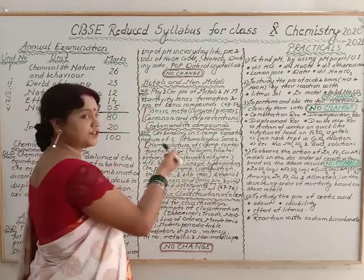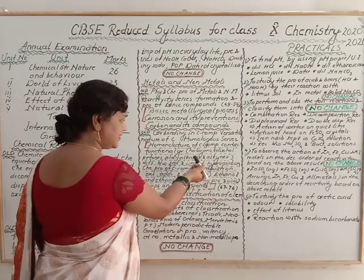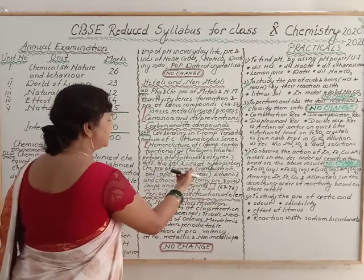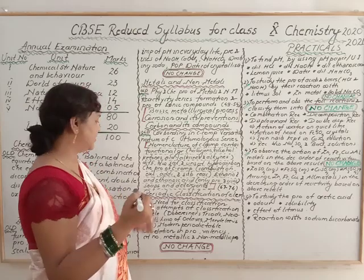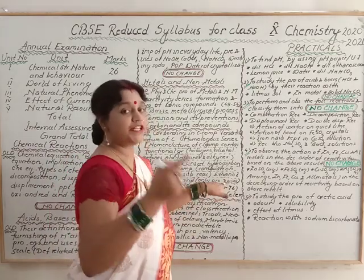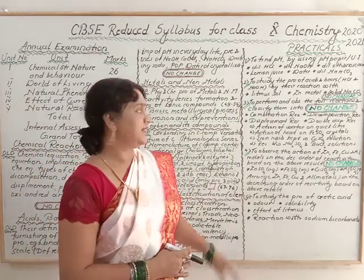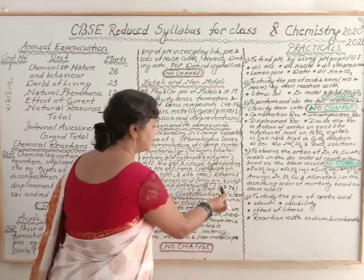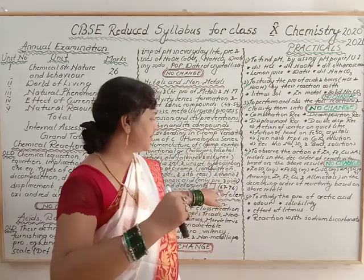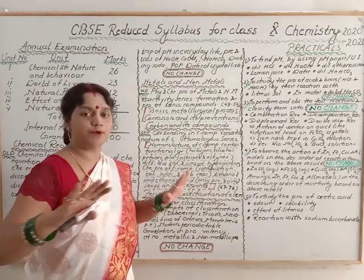The deleted portions include: nomenclature of carbon compounds containing functional groups (very important but deleted), halogens, alcohol, ketones, aldehydes, alkanes, alkenes, double bond, triple bond, difference between saturated and unsaturated hydrocarbons, chemical properties of carbon compounds, combustion, oxidation, substitution reactions, ethanol and ethanoic acid properties and uses, and soaps and detergents — all completely deleted. In the NCERT book, this starts from page number 67 onwards.